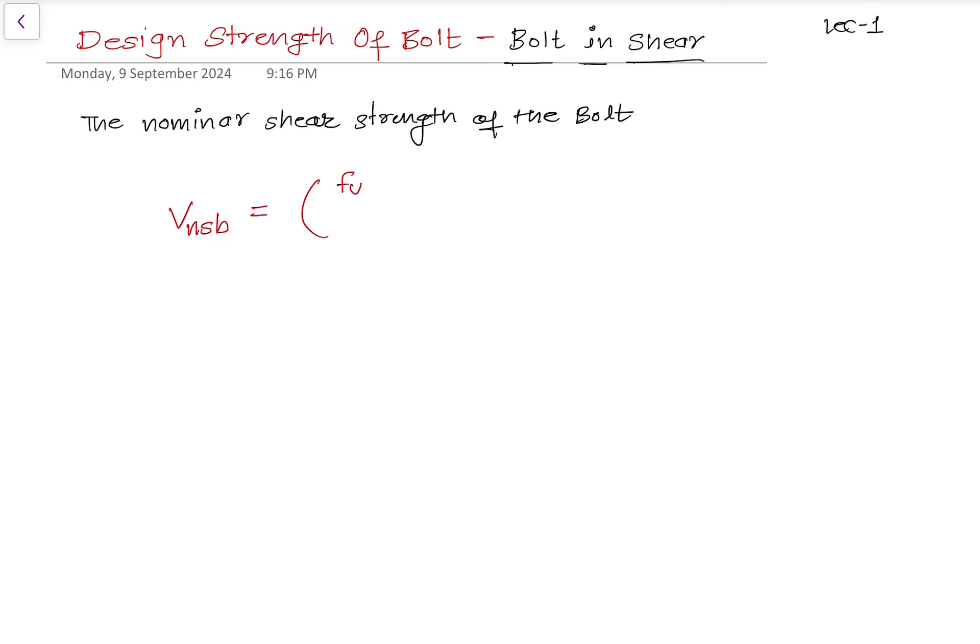The formula is: V_nsb equals, in brackets, f_u divided by square root of three, bracket complete, multiplied by n_n into A_nb plus n_s into A_sb. This is the formula to identify the nominal shear strength of the bolt.